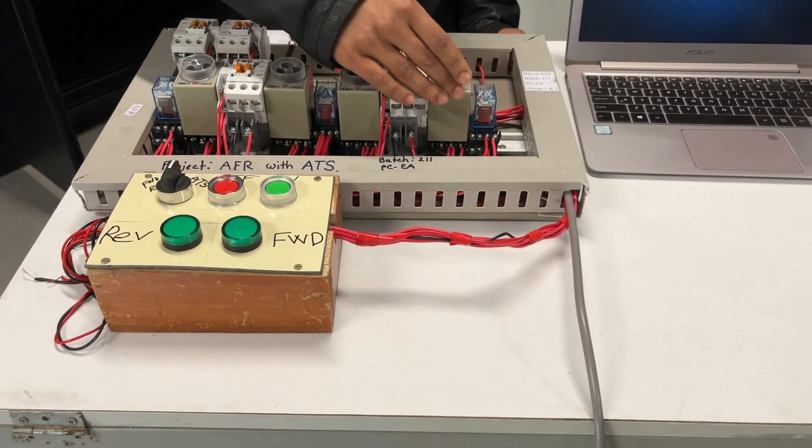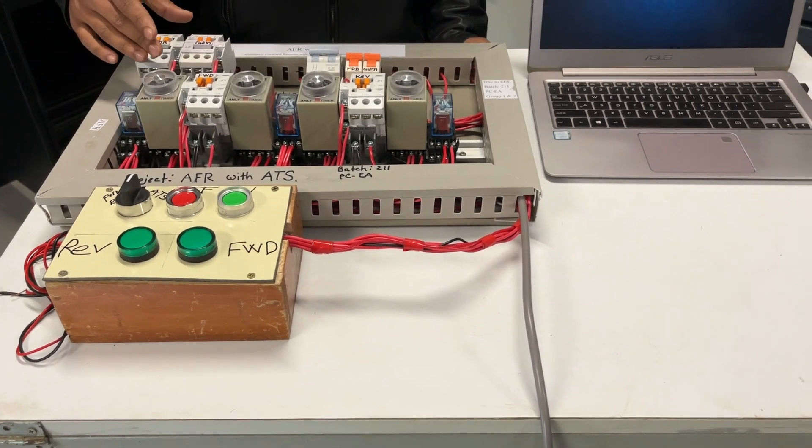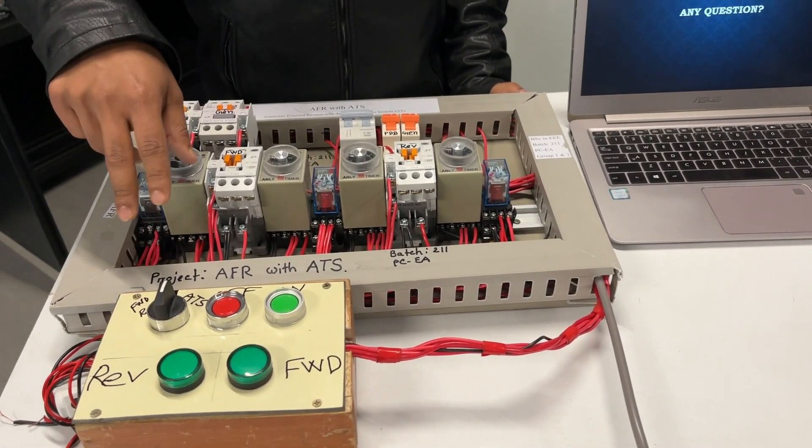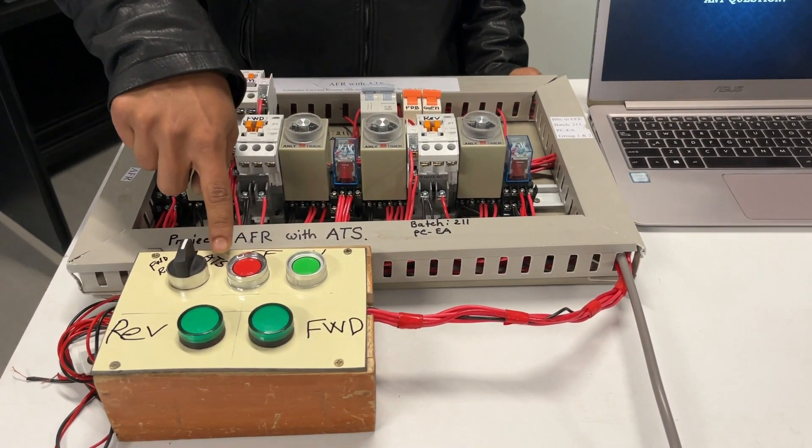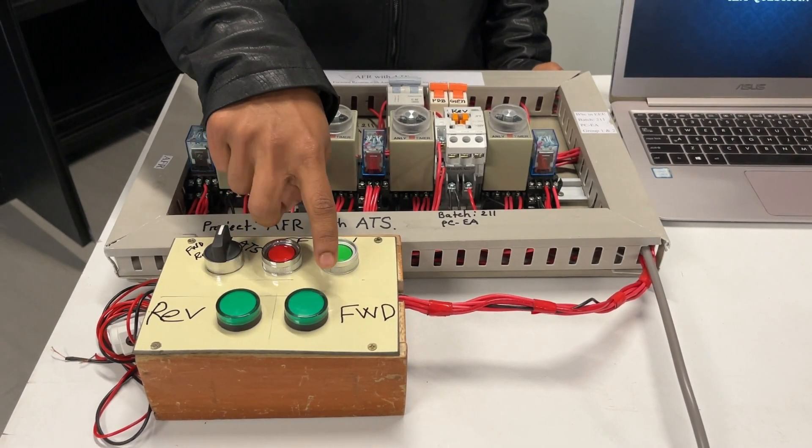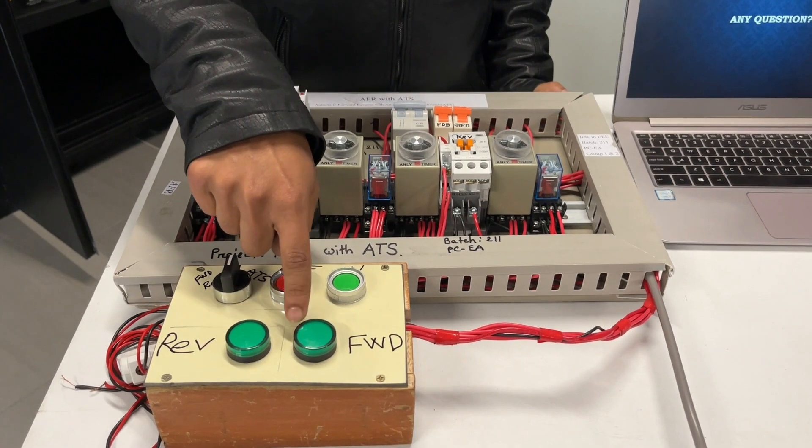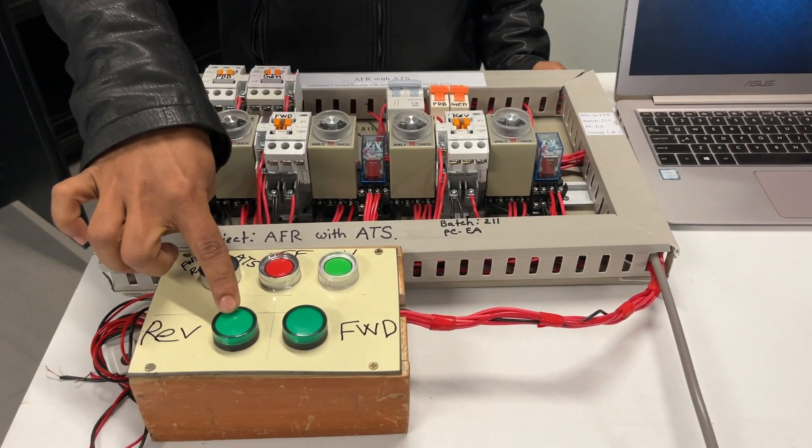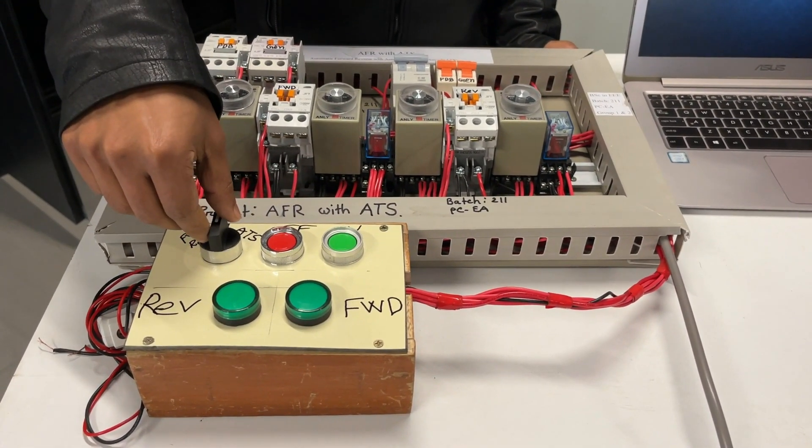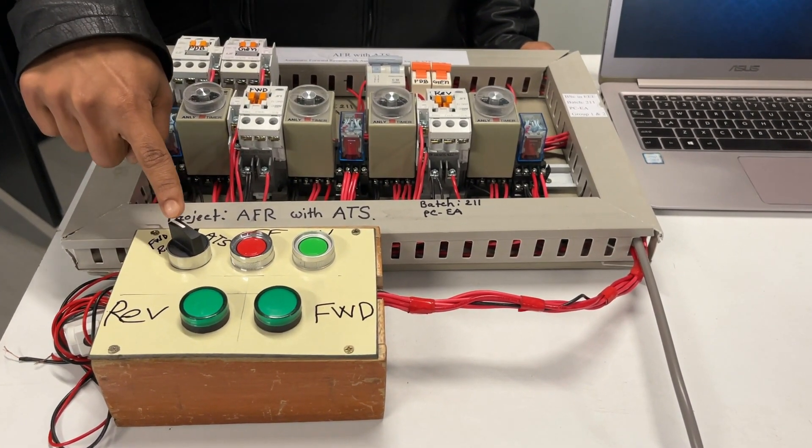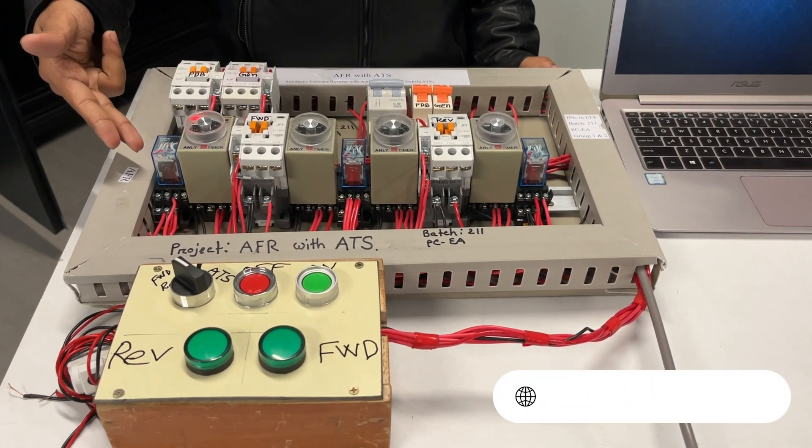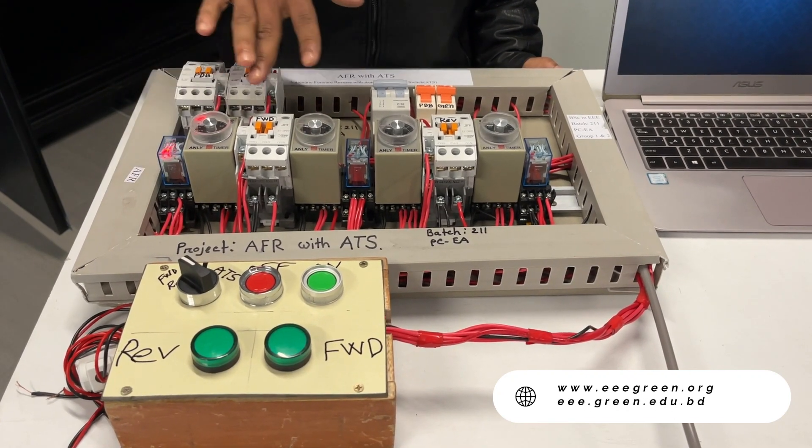The circuit includes a circuit breaker, relay, and controlling circuit. The system uses a switch along with indicators for the motor. The timer is set to 10 seconds.